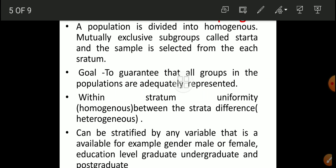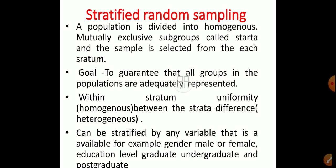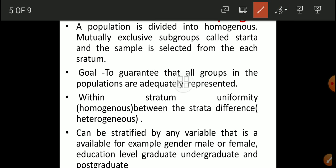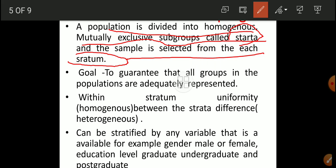Now, the second most important type of random sampling is stratified sampling. Stratum means a layer. A population is divided into homogeneous, mutually exclusive subgroups called strata, and the sample is selected from each stratum. A population is divided into a homogeneous group.